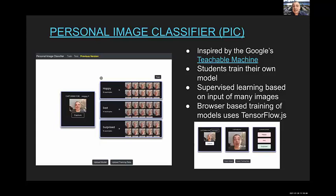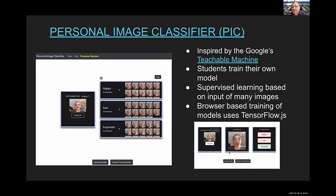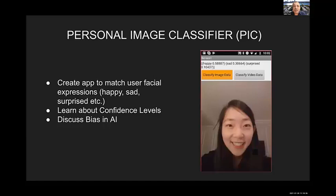The second project in this group is the Personal Image Classifier, or PIC, inspired by Google's Teachable Machine. Students train their own model — in the previous example the model was pre-trained, but here students use a browser to train it themselves. You can classify facial expressions like happy or sad, then train the model and test if it's successful in the browser. Once ready, you import it into App Inventor and build an app that asks users to match facial expressions to gain points. This introduces confidence levels and continues discussion of bias in AI.